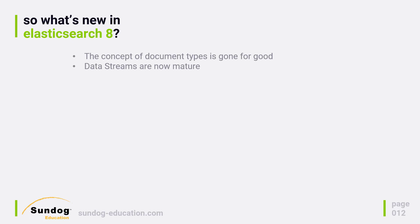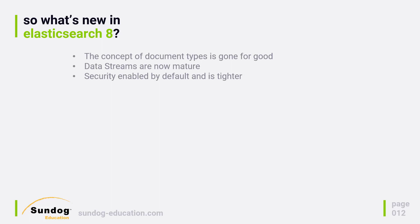Another big change in Elasticsearch 8 is that security is now enabled by default. You may remember that one of the first things we did when installing Elasticsearch in this course was to turn off security, which makes sense if you're just learning and not dealing with sensitive data. But in practice, it makes life more difficult. Not only is security enabled by default now, it's also a lot tighter — you need something called an enrollment token to use Elasticsearch at all, and that needs to be passed around with every request.